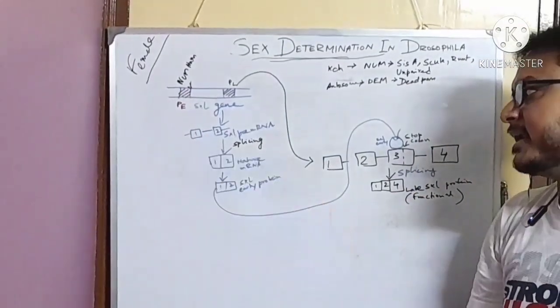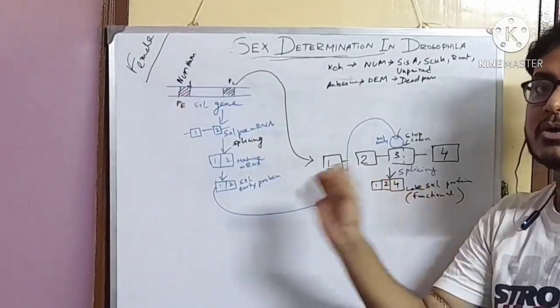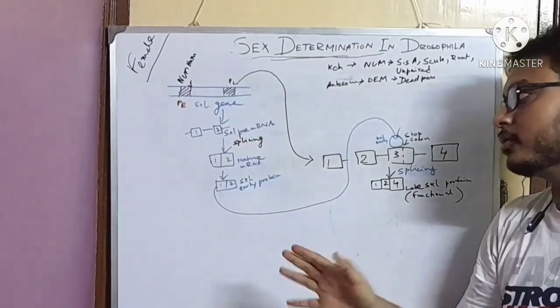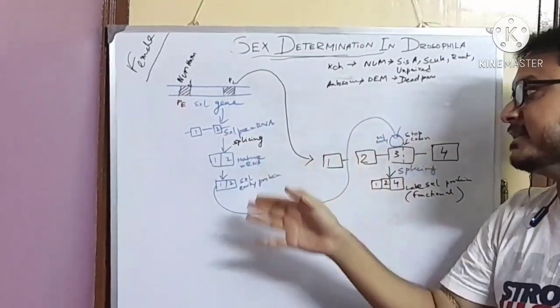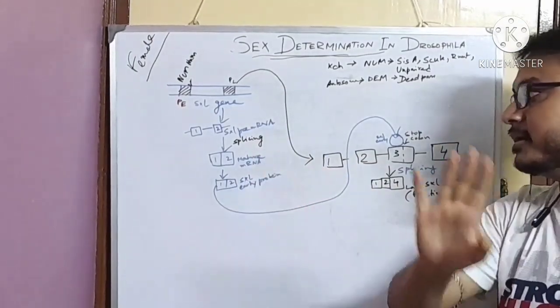This mRNA has two parts, introns and exons. We all know that exons are the coding part and introns are the non-coding parts. Through the splicing mechanism, the non-coding parts are removed and mature mRNA are produced.